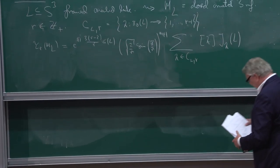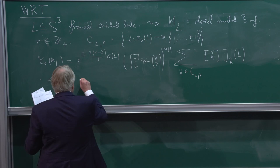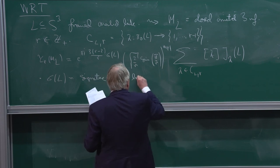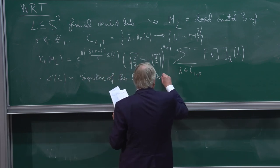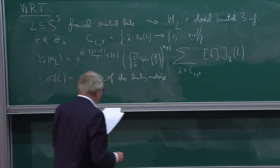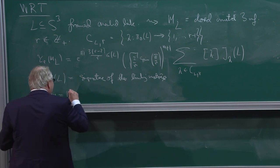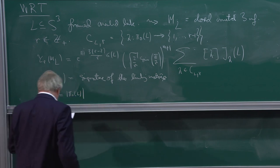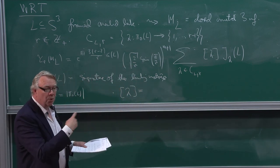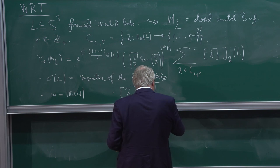So σ(L) is the signature of the linking matrix. M is the size of π₀(L), i.e., the number of components of L. And λ here is really a vector: if I order the components, it would be λ₁ up to λ_m. This is a product over the components of L, where I take the quantum integer for that integer.